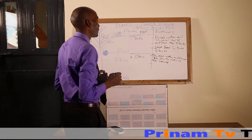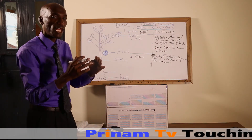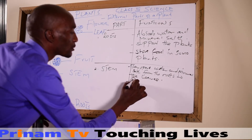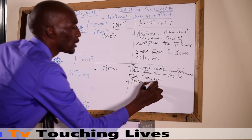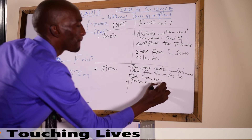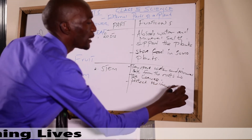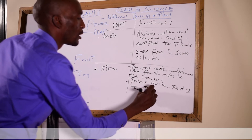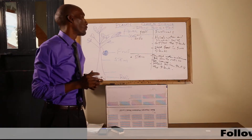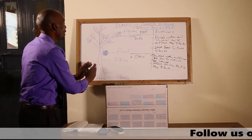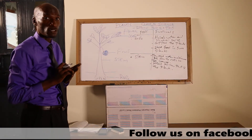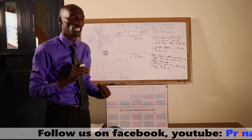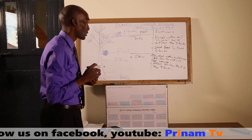Number two, the stem also protects the inner part of the plant. The inner part of the plant is very soft, so we need the stem to protect that inner part.